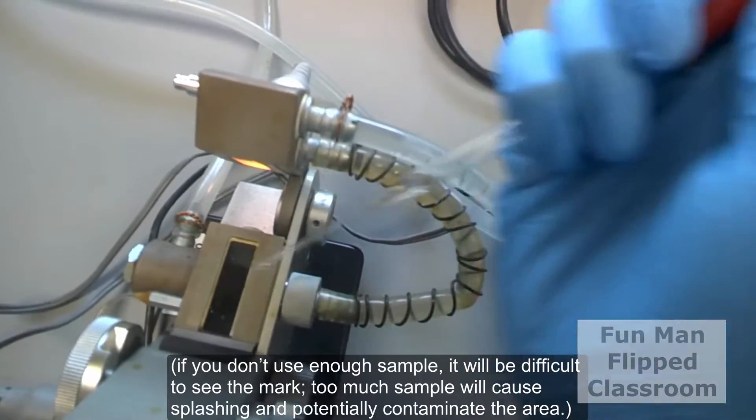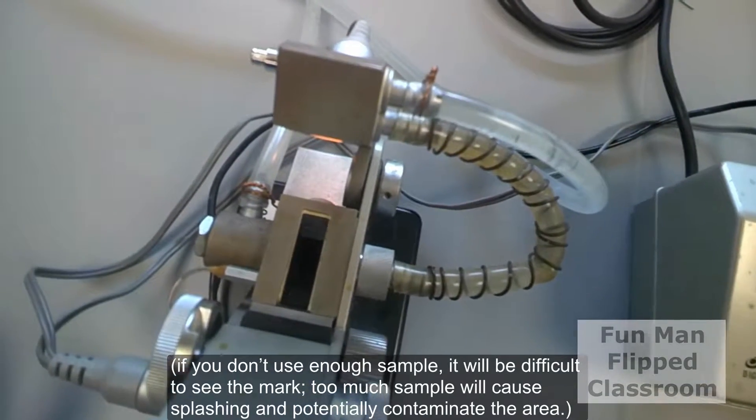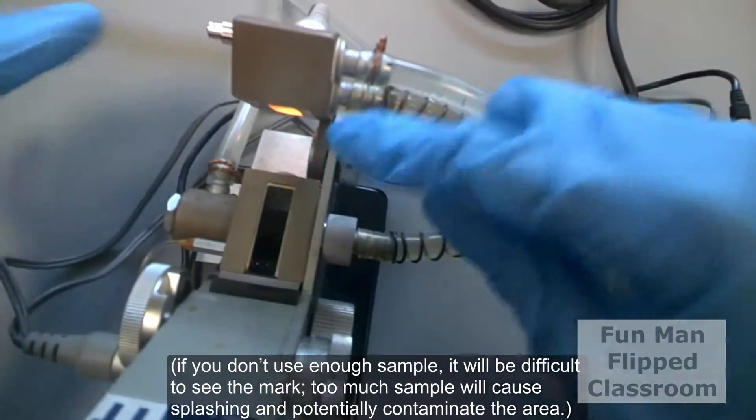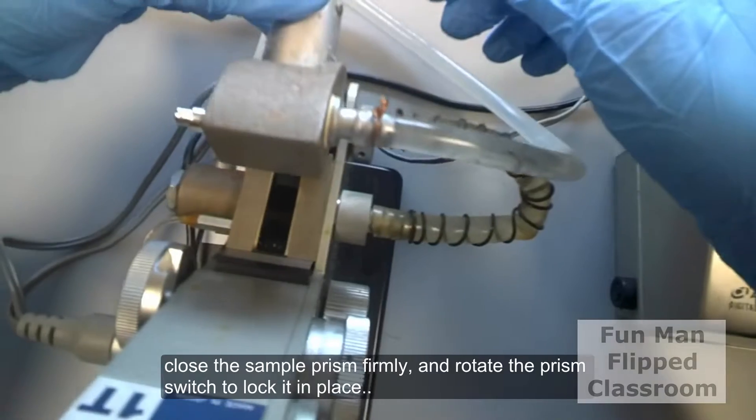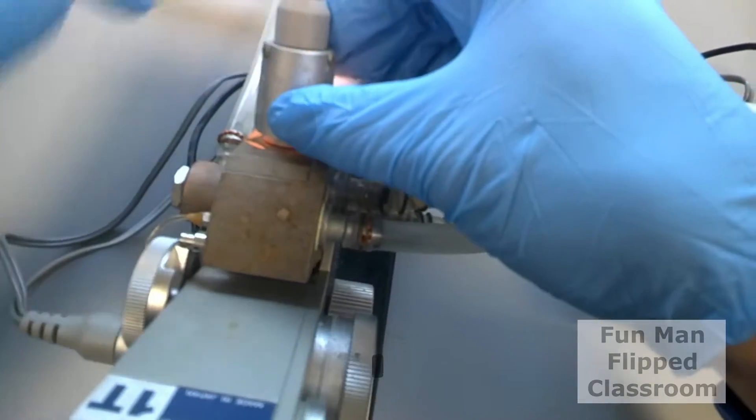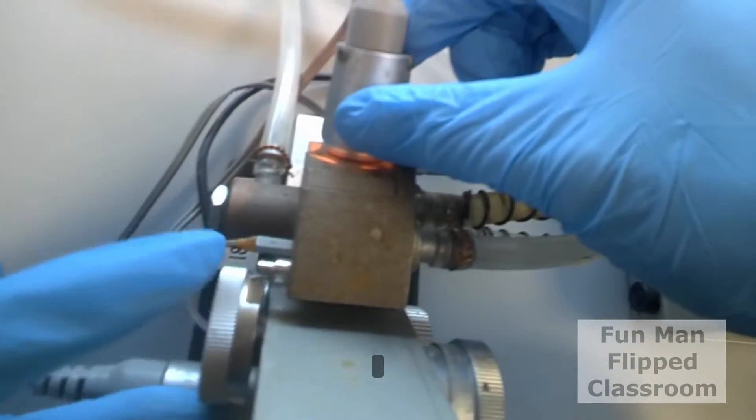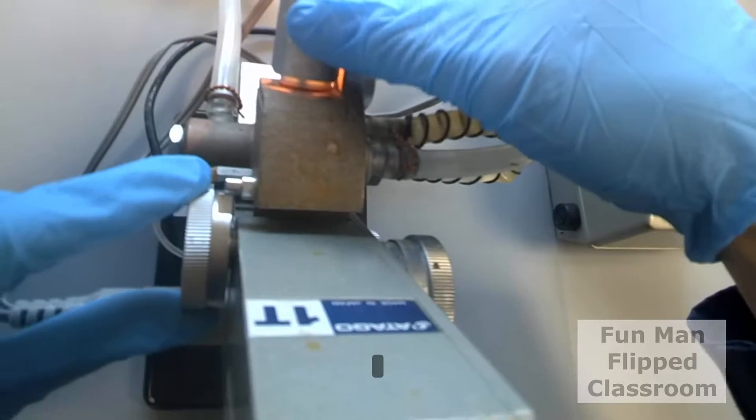If you don't use enough sample, it will be difficult to see the mark. Too much sample will cause splashing and potentially contaminate the area. Close the sample prism firmly. And rotate the prism switch to lock it in place.